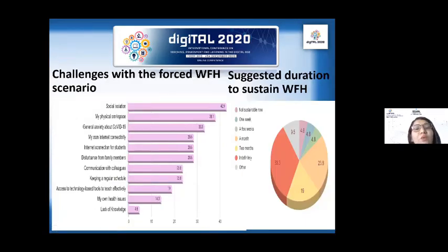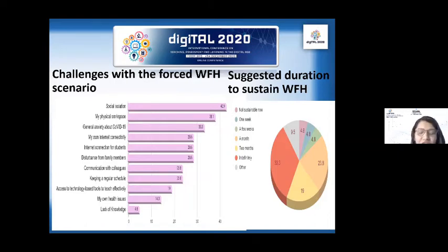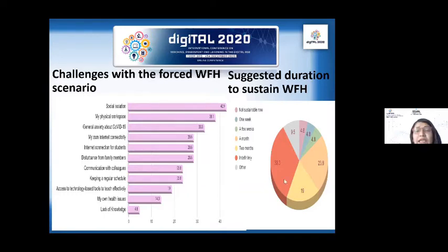The predominant challenges faced by academics in the forced work-from-home during lockdown were social isolation at 43%, physical workspace issues at 35%, and fear about the unknown virus at 33%. There were also domestic hurdles and stress that recurred during working from home. HEIs were forced to embrace teleworking at breakneck speed without thinking about the implications on academics. Only around 33% of academics were comfortable with the work-from-home arrangement.